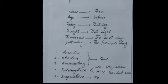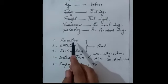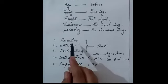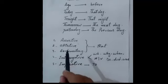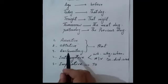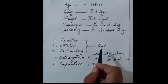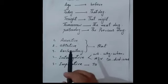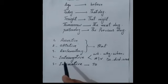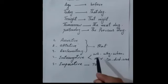Let's see how many types of sentences there are. We have assertive sentences, optative sentences, exclamatory sentences, interrogative sentences, and imperative sentences. When your sentence is assertive, optative, or exclamatory, you have to use the conjunction 'that'.